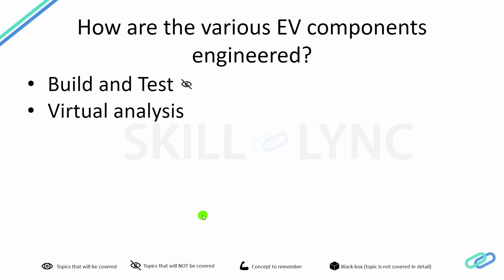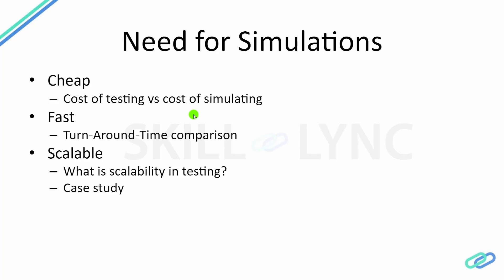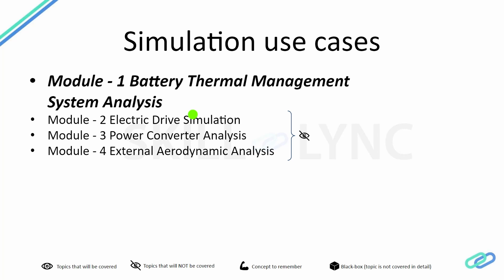Once we have talked about the different components of an electric vehicle, we'll discuss how these components are engineered. There are two classic methods: the first is simply build and test using a trial and error approach, which is always costly and time consuming. Virtual analysis — the use of computational tools to test components quickly — is the way to go. Simulations are very cheap because you don't have to build the product, they run very quickly compared to experiments, and they are an extremely scalable process.